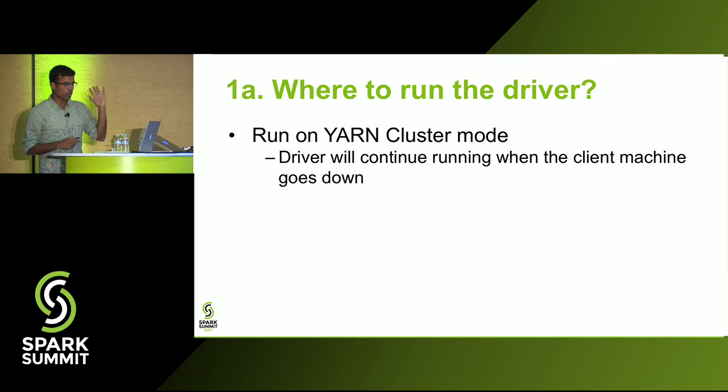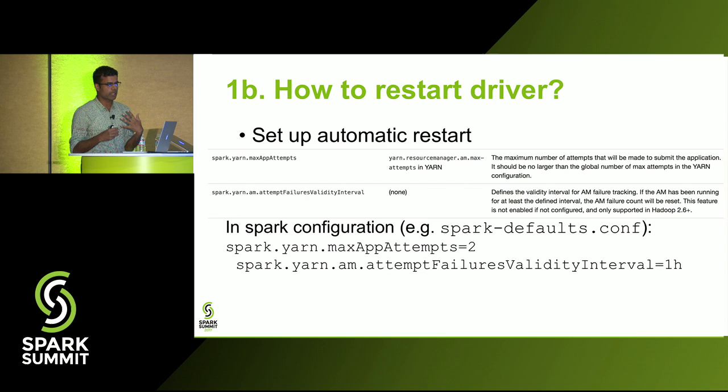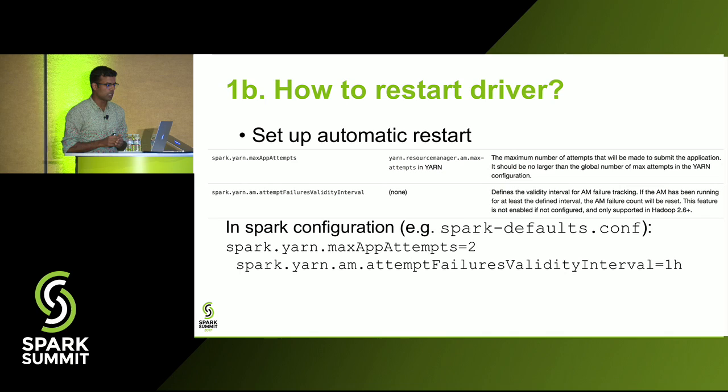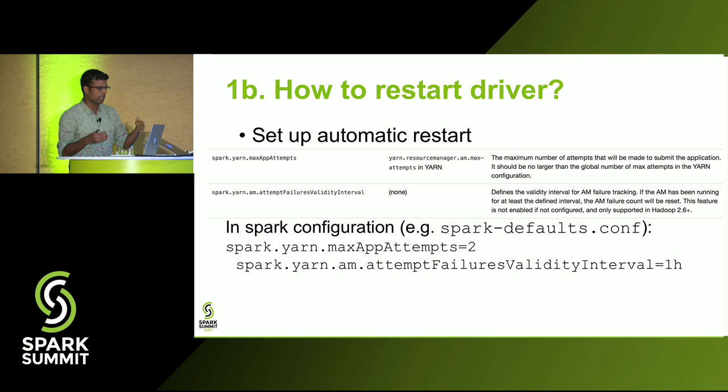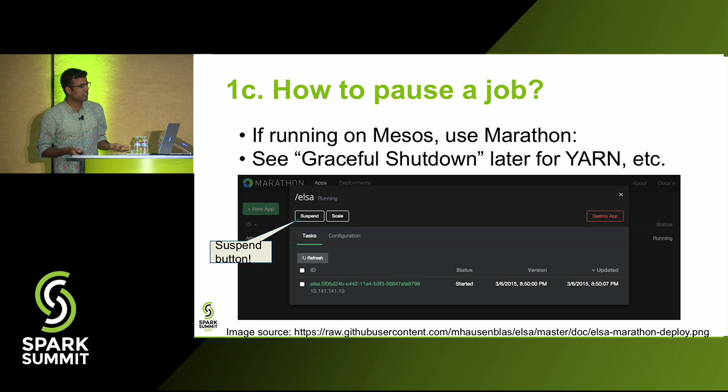So run your driver in cluster mode. For restarting drivers, there are two YARN settings: yarn.max.attempts specifies how many restart attempts YARN makes before giving up, and an interval property resets the failure count. For example, set max attempts to two and the interval to one hour — meaning you accept two failures per hour; any more than that, fail the job.